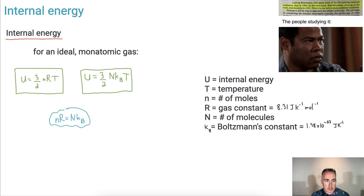Let's make sure we remember these are here. What's the internal energy measured in? It's joules. Temperature's going to be in Kelvin. n is the number of moles, N is the number of molecules.